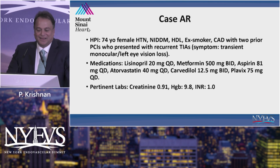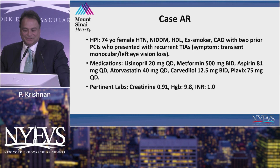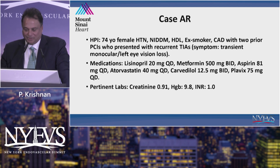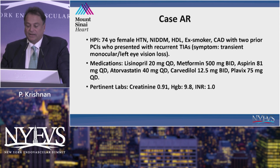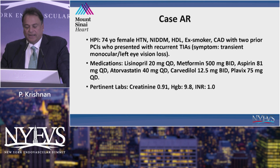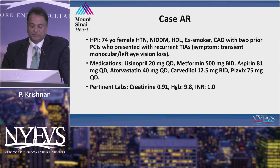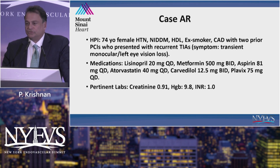So this is a 74-year-old female with hypertension, non-insulin-dependent diabetes, hyperlipidemia, and an ex-smoker who presented to our clinic with two prior PCIs. She was called by her PCP letting us know she'd had recurrent TIAs. She went to an ophthalmologist and was diagnosed with transient monocular left eye vision loss, and so she was referred to us.